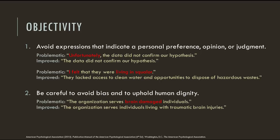As an academic writer, you're expected to be aware of your own biases, and to uphold human dignity by using sensitive and respectful language. The APA style manual gives detailed instructions for writing about topics like race, gender, sexual orientation, and disability. For example, it warns that you should never objectify a person by their disability or medical condition. It is not respectful to call people brain-damaged individuals, or to label them AIDS victims, autistics, or wheelchair-bound. The APA recommends using people-first language — so it would be better to say: the organization serves individuals living with traumatic brain injuries. If you are uncertain about whether your writing conveys bias or lacks objectivity, check your style manual, talk to your professor, or visit the University Writing Center.